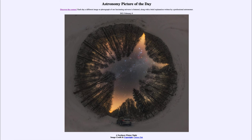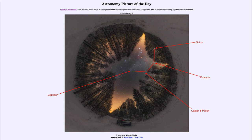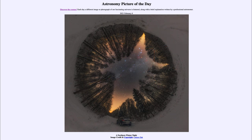The Winter Hexagon starts with the bright star Capella almost straight up at the top of the image near the zenith, then moves to Castor and Pollux in Gemini, then a little further to Procyon in Canis Minor — the smaller hunting dog. Hidden in the trees towards the top is Sirius in Canis Major, then near one of the legs of Orion is Rigel, and finally Aldebaran, the eye of the bull in the constellation of Taurus. Moving back to Capella overhead completes the hexagon in the winter sky.